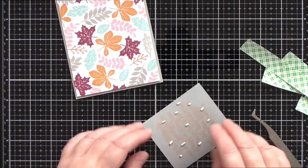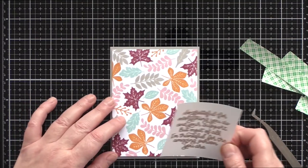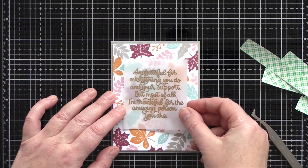I then added the leaf background panel to a smoke card base. This color picked out the gray in the stamped leaves perfectly.